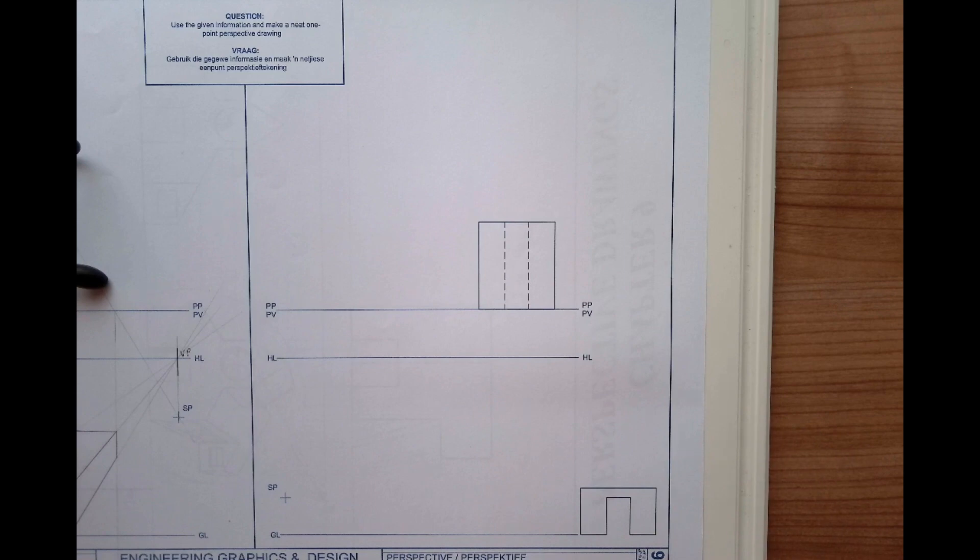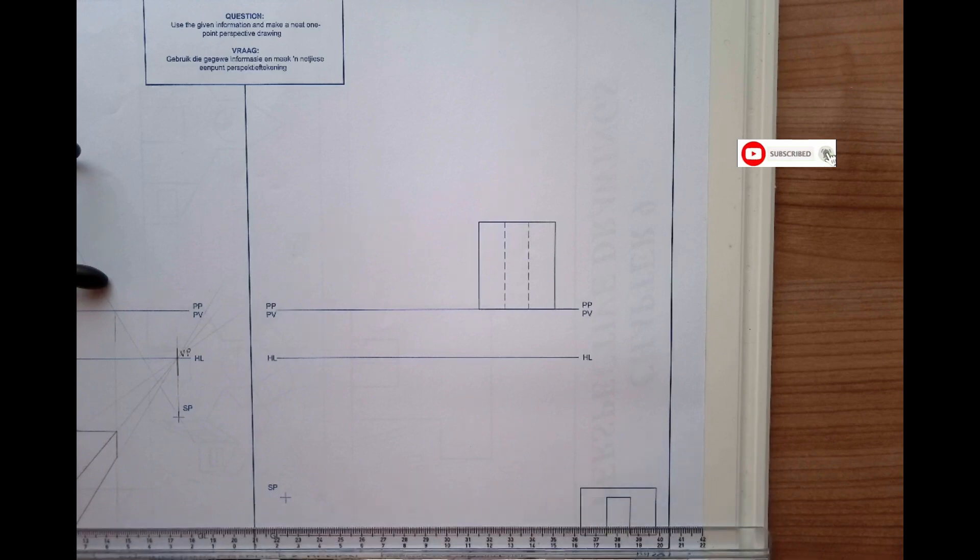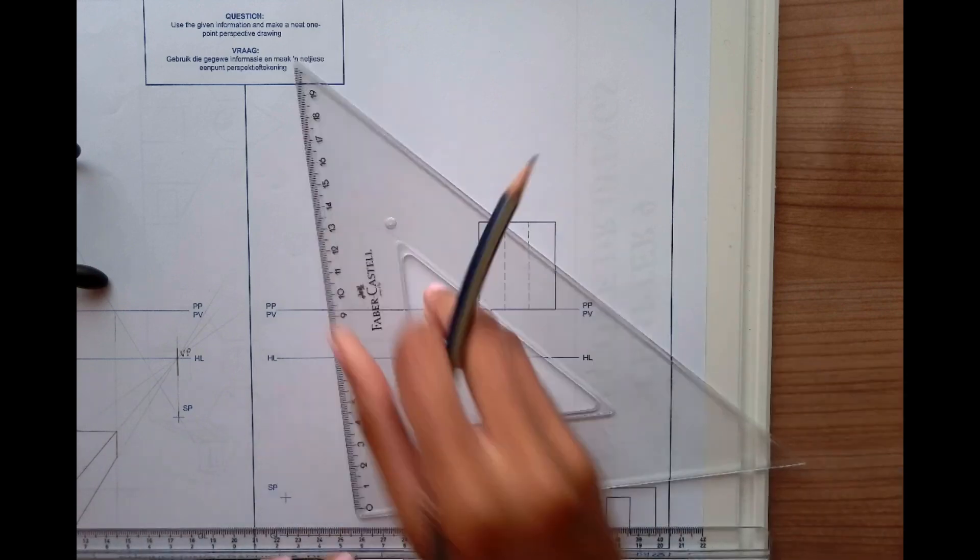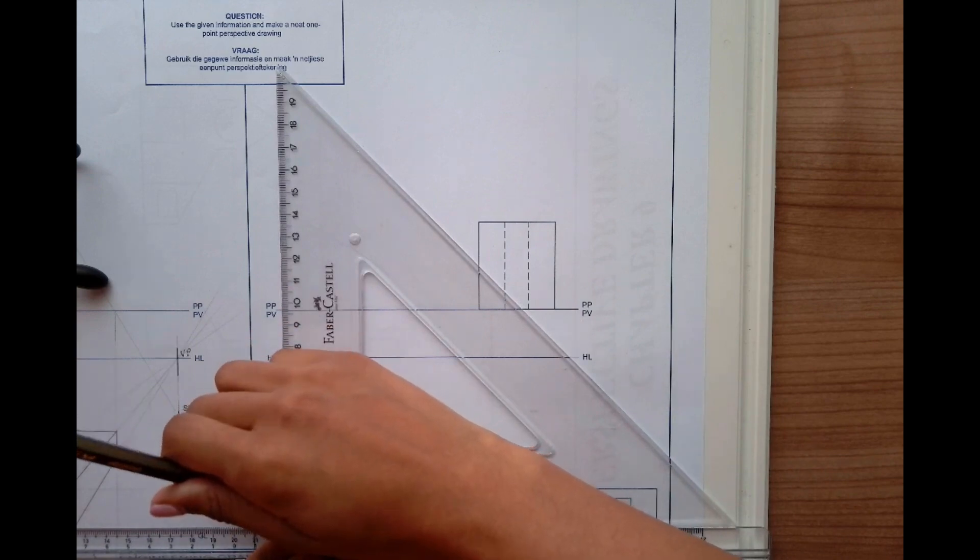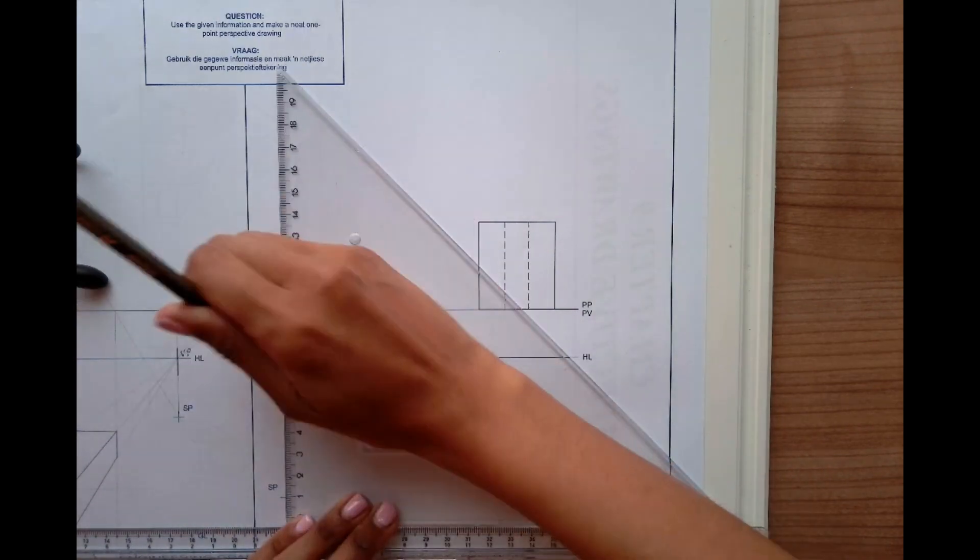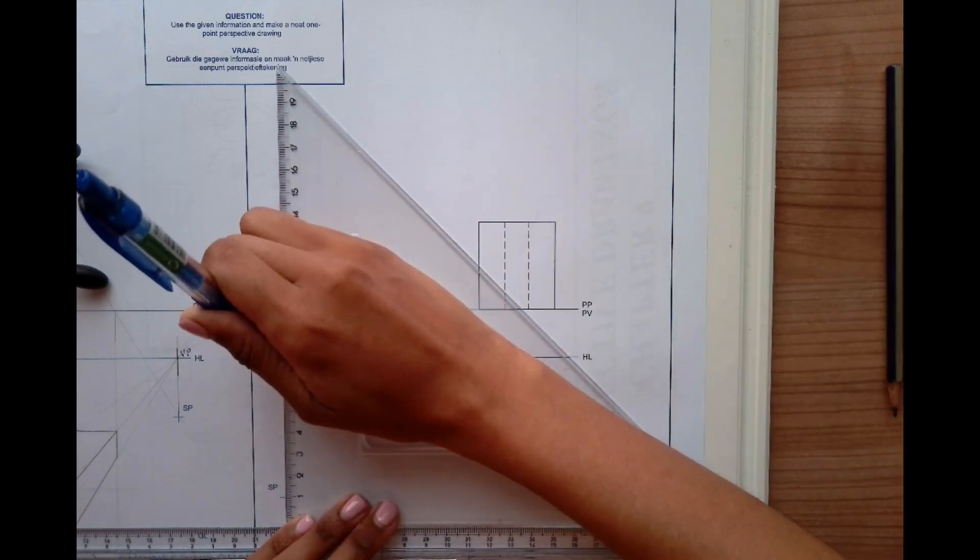First things first, you always find the vanishing point. To get the vanishing point, you project the center or the middle of the stationary point up, and then where it intersects with the horizon line.